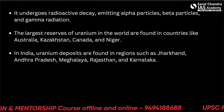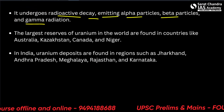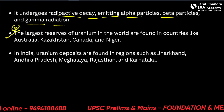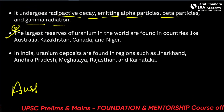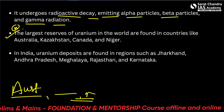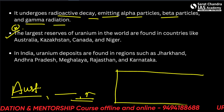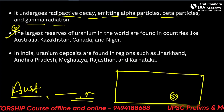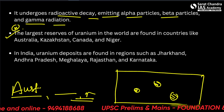Uranium undergoes radioactive decay, emitting alpha particles, beta particles, and gamma radiation. The largest reserves of uranium in the world are found in countries like Australia, Kazakhstan, Canada, and Niger. These are spread irregularly across the globe.